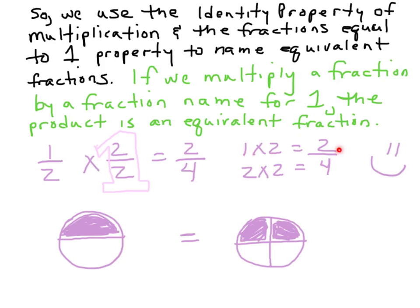We're saying one times two is two, two times two is four. Remember, we're just multiplying straight across. So even though in a sense we're multiplying by two, we're really multiplying by two over two, which is the fractions equal to one property and the identity property of multiplication. Any number times one is going to equal itself. So this is one, but it's two over two, and it still equals one. I love this stuff — it's like magic.